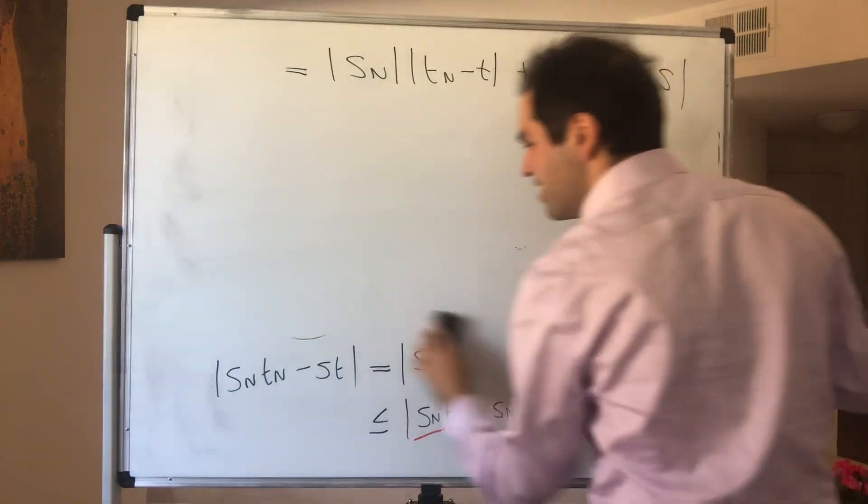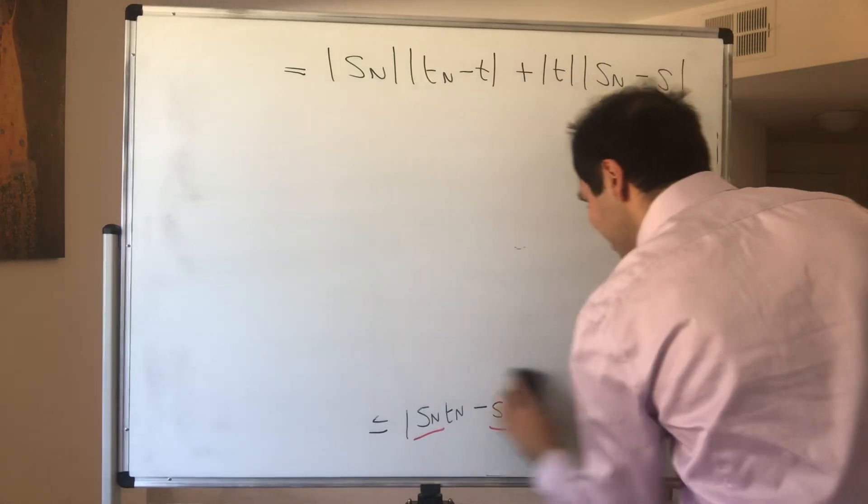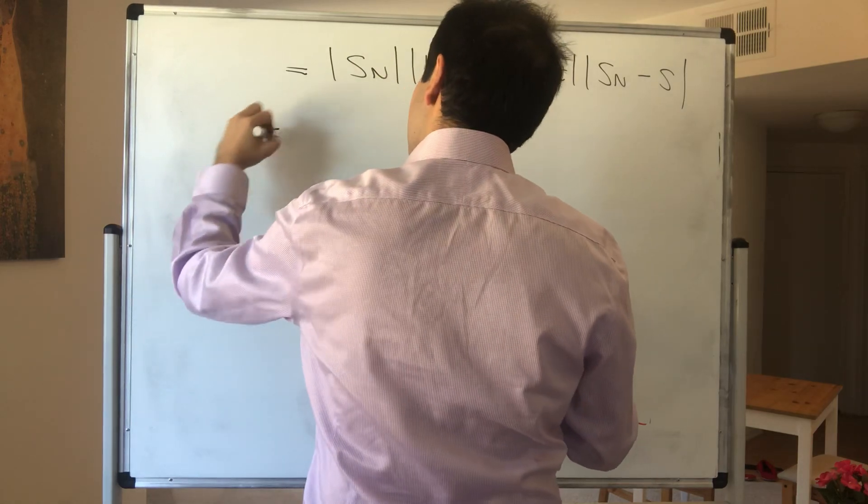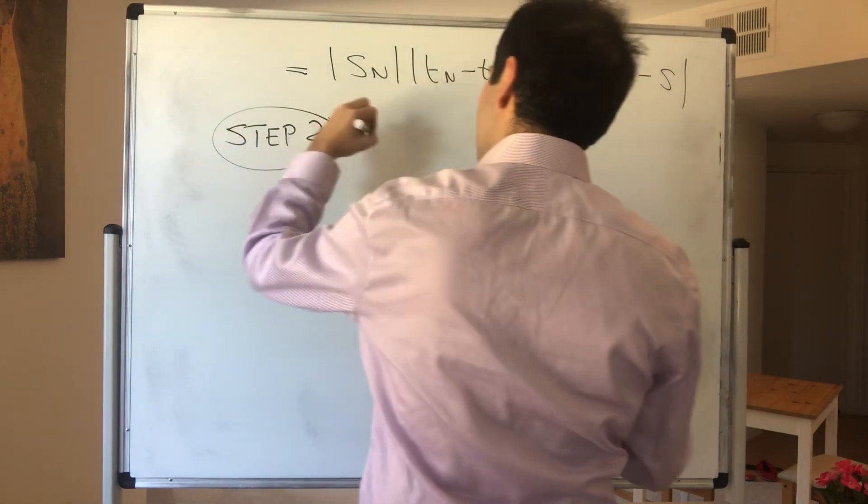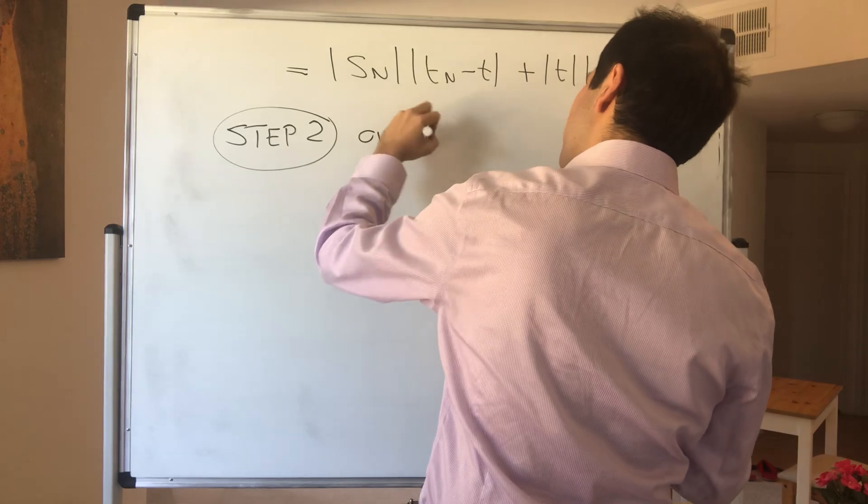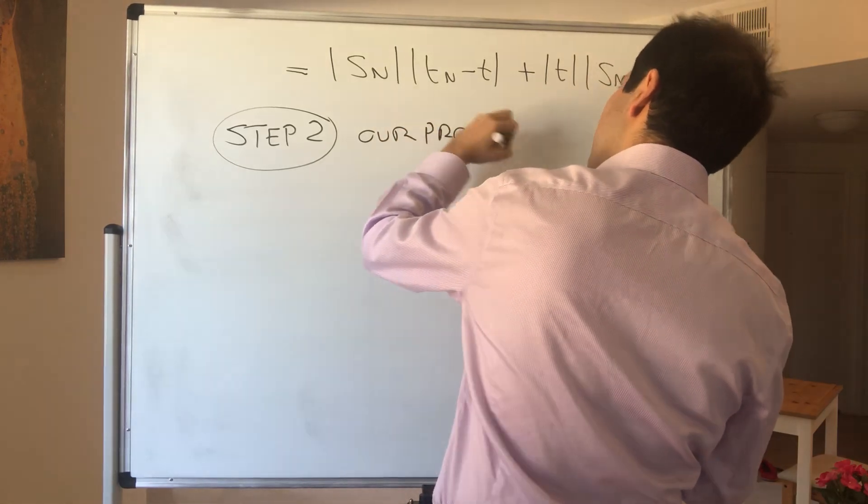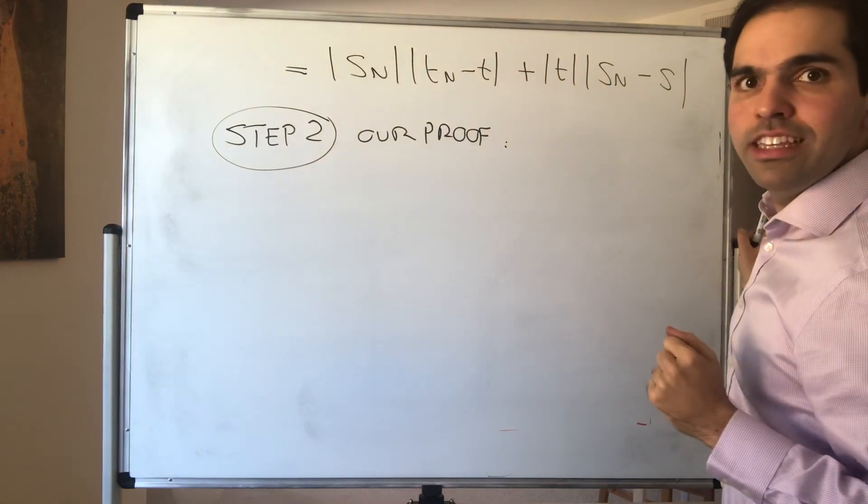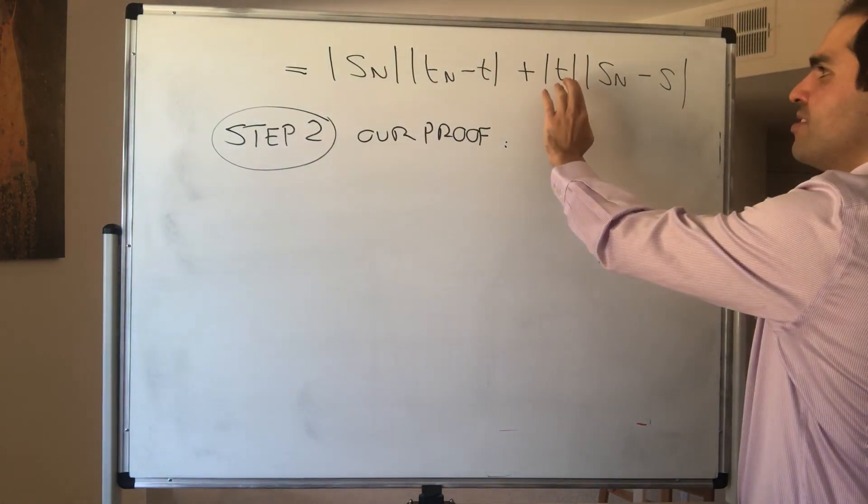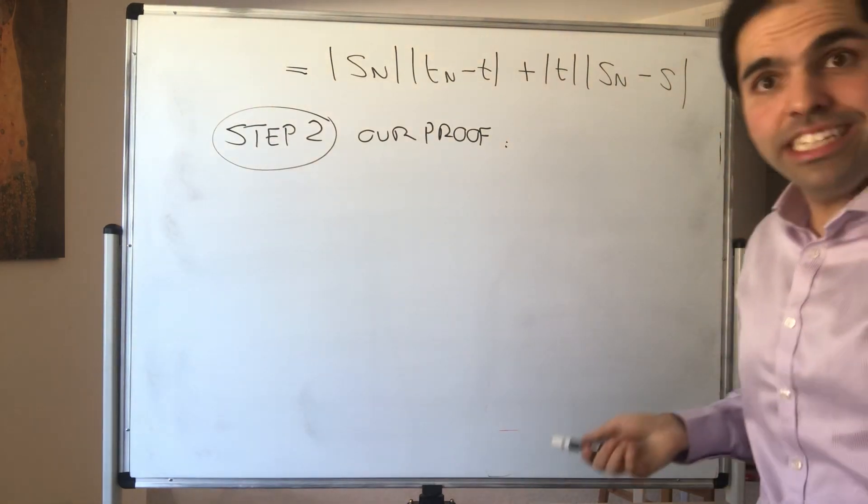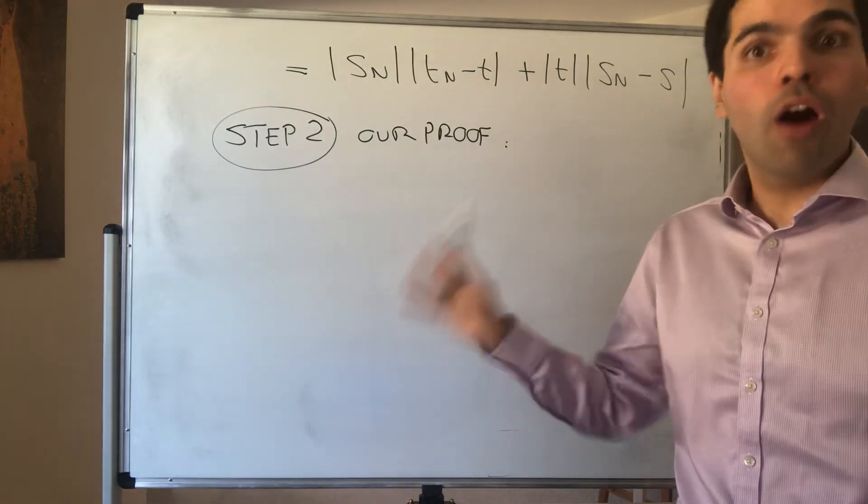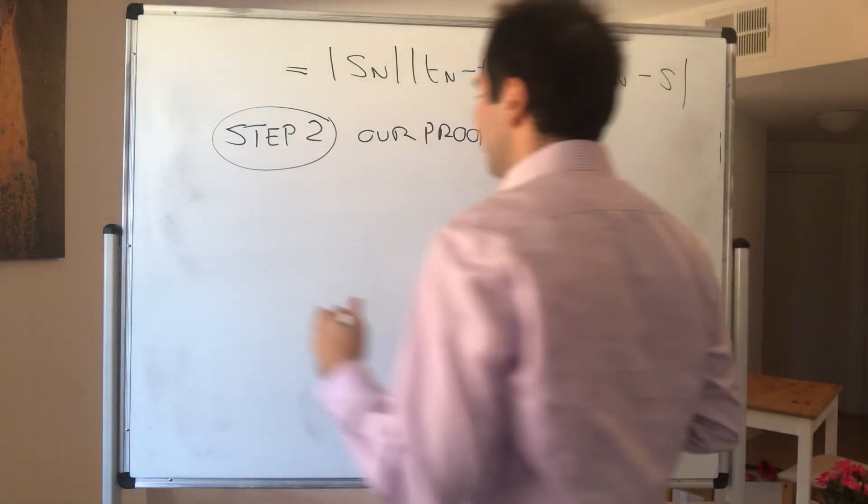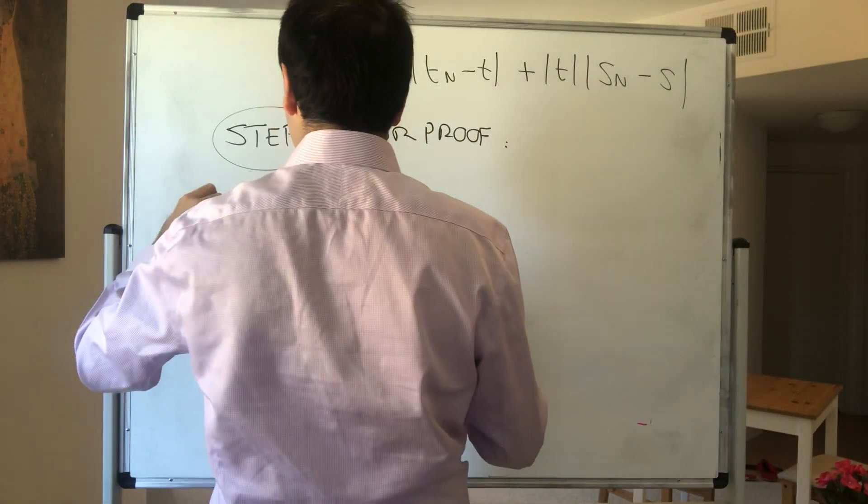So step two, our actual proof. First of all, because eventually we want to divide by T, let's just assume T is non-zero. If T is zero, you can just do the problem directly. In fact, there's a homework problem on this. So let's just assume T is non-zero.